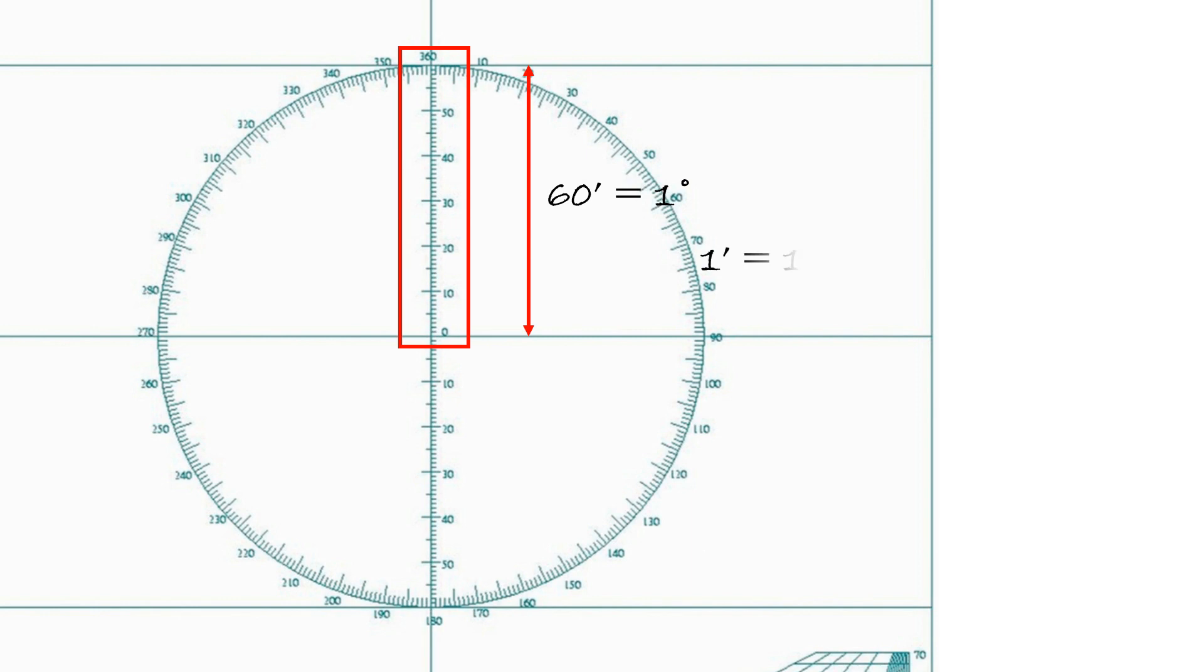Note the breakdown of 60 arcminutes down the center line. 60 arcminutes equals 1 degree. Also, 1 arcminute equals 1 nautical mile, which is roughly 2,000 yards or meters.